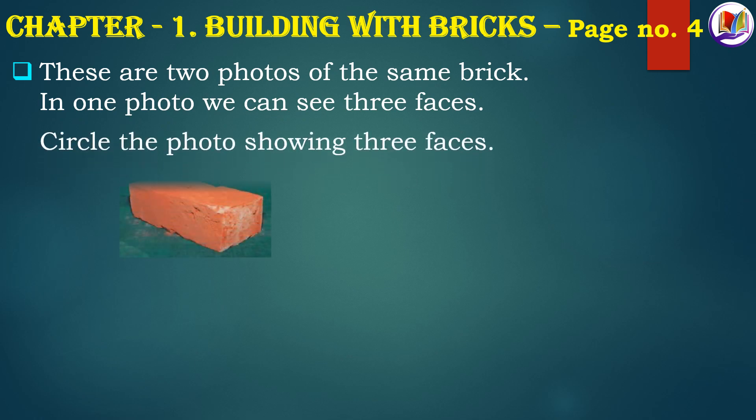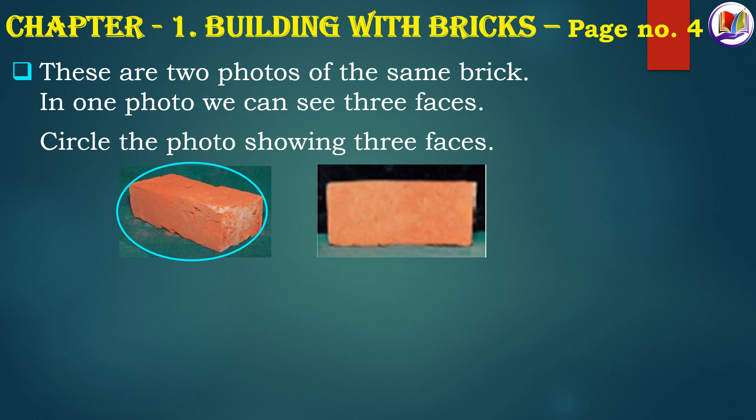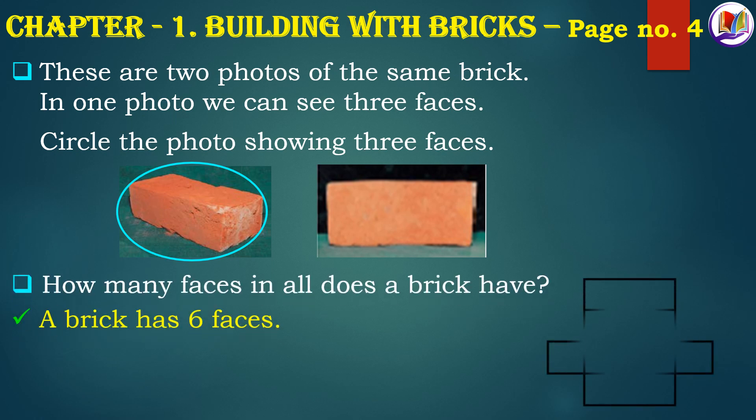Now, let's begin with textual exercise on page number 4. These are 2 photos of the same brick. In one photo, we can see 3 faces. Circle the photo showing 3 faces. The first picture has been circled and shows 3 faces, whereas the second brick shows only 1 face. How many faces in all does a brick have? A brick has 6 faces. A representation of the net has been shown on the right side for your understanding.